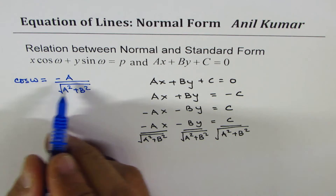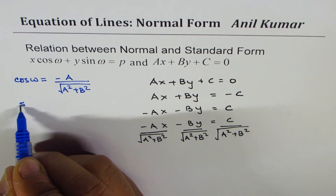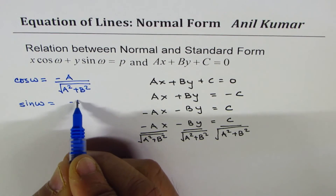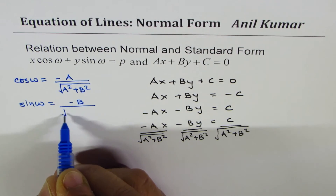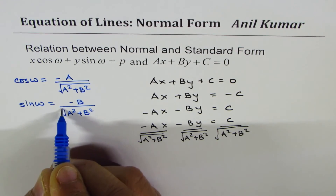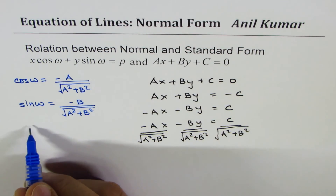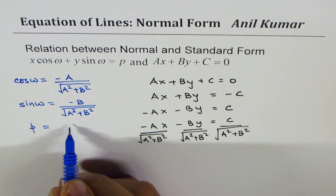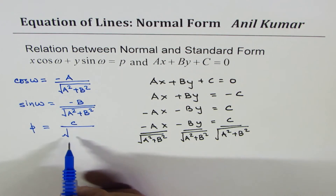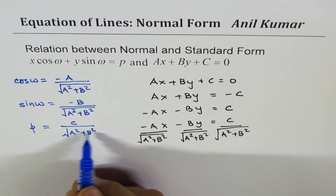This gives us: cos ω = −A / √(A² + B²), sin ω = −B / √(A² + B²), and the perpendicular distance p = C / √(A² + B²), and we always keep p positive.